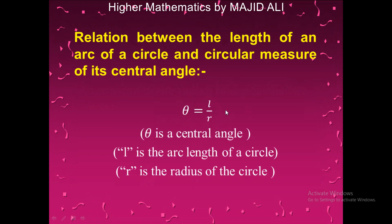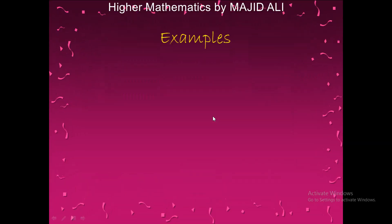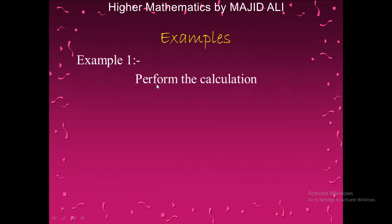Here is an important relation between the length of an arc of a circle and the central angle. The formula is: θ = l/r, where θ is the central angle, l is the length of the arc, and r is the radius of the circle.